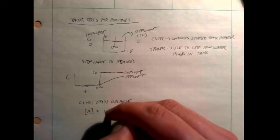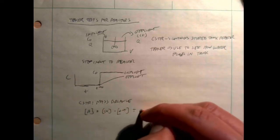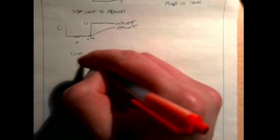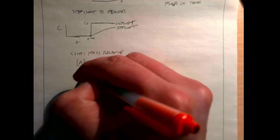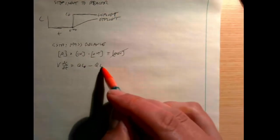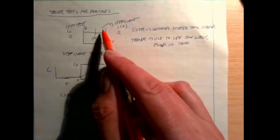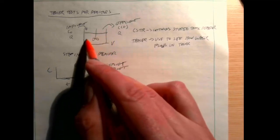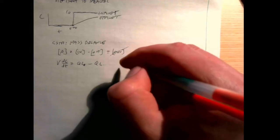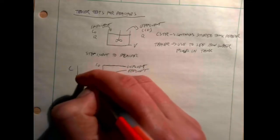To do this we perform a mass balance. The accumulation equals the in minus the out, plus or minus reaction. For this tracer there's no reaction, so our accumulation is V times dC/dt. The inflow term is Q times C₀ — what's coming in after we make the step at t equals zero. What's going out is Q times C, because in a well-mixed reactor the concentration leaving is the same everywhere. So this gives us a differential equation that needs an initial condition.